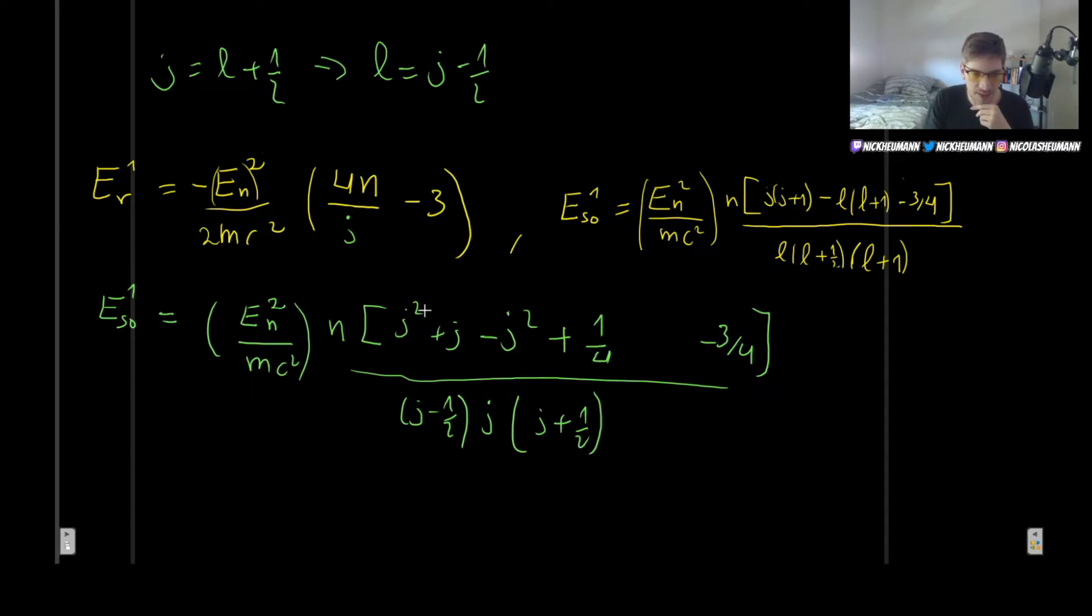And here the J squares will cancel out, and this here will also simplify a little bit because we have one-fourth minus three over four, which is going to be minus two over four, which will be minus one-half. And of course, since these canceled out, we can get rid of them.